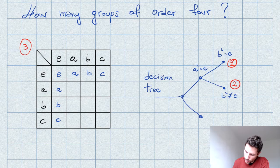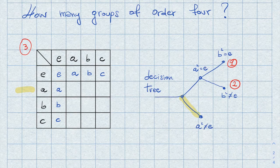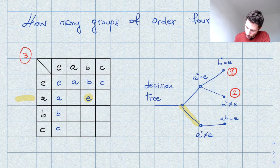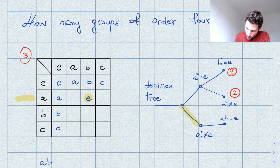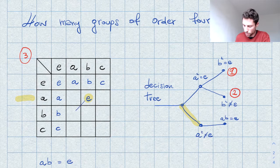Now we go in the direction where A squared is different from the identity. This means we need to choose a different inverse for A; let's choose B, that is A times B equals E. Whenever A times B equals E, B and A are inverses of each other, so B times A also equals E. This means E must appear symmetrically with respect to the diagonal of the table.